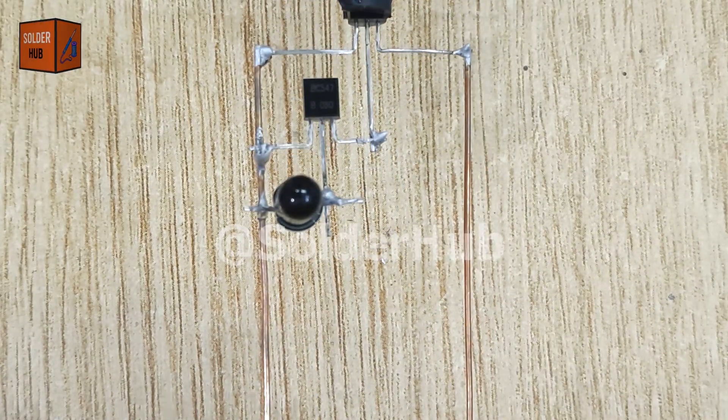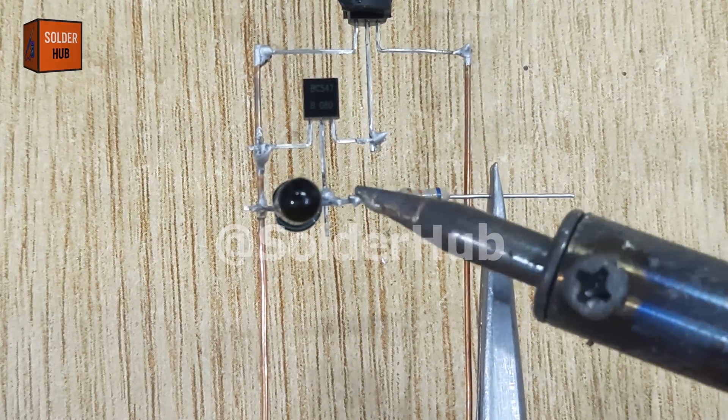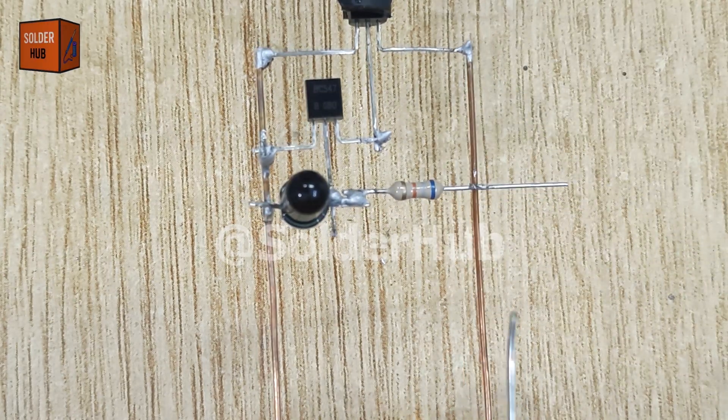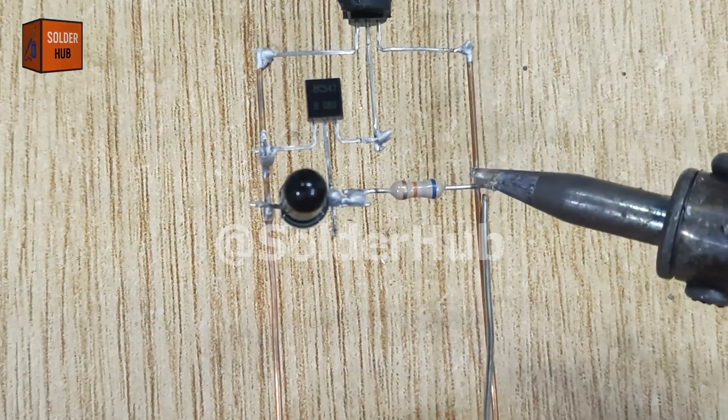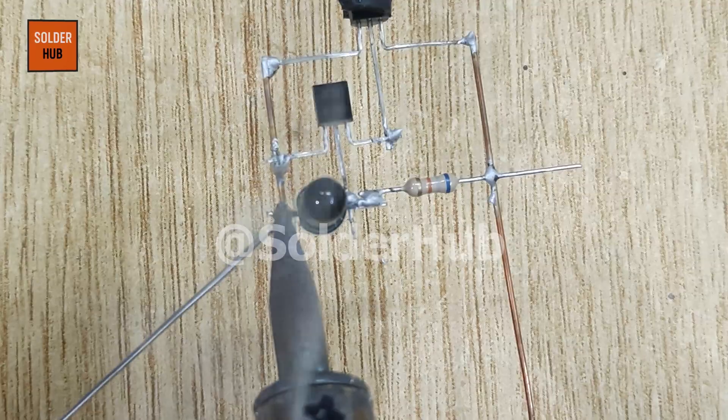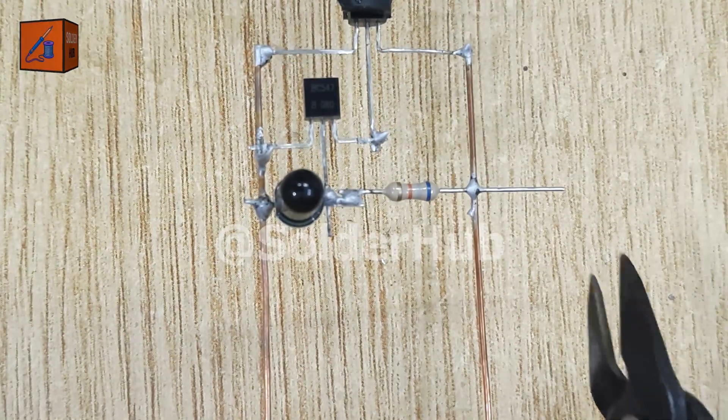After trimming the extra pins, I'll bring in a 68k ohm resistor. One side of the resistor will be soldered to the positive pin of the IR receiver, and the other side will go to the copper wire soldered to the emitter of the first transistor. This resistor acts like a stabilizer, making sure our circuit doesn't trigger randomly.